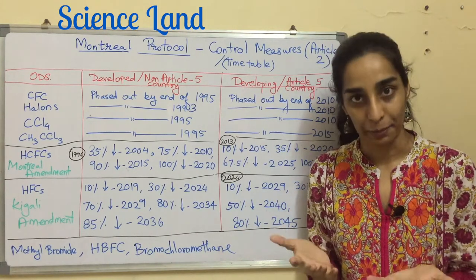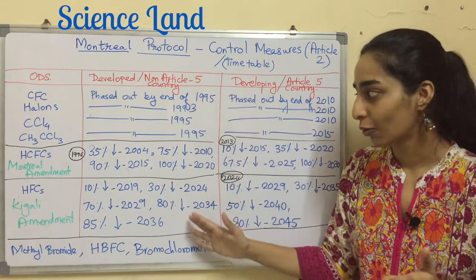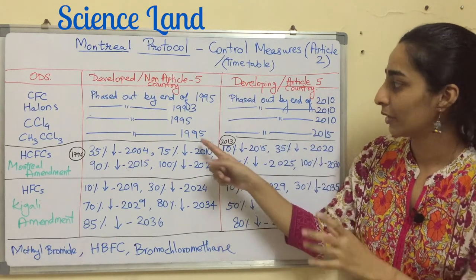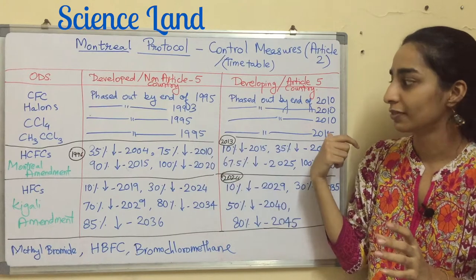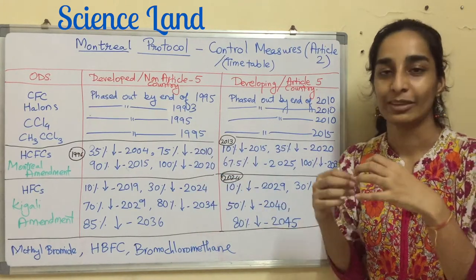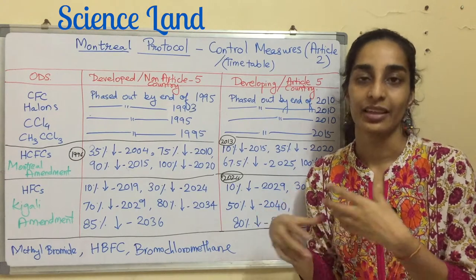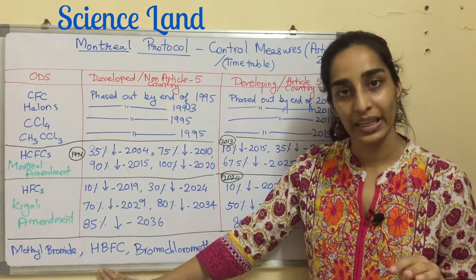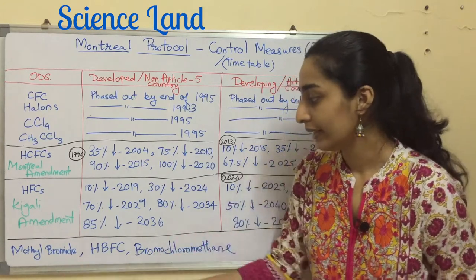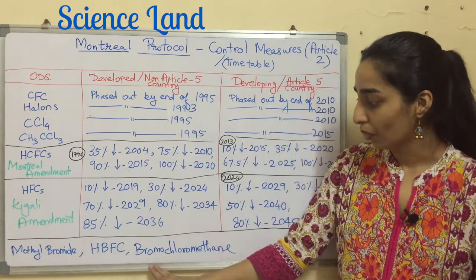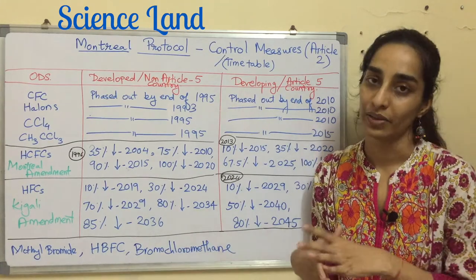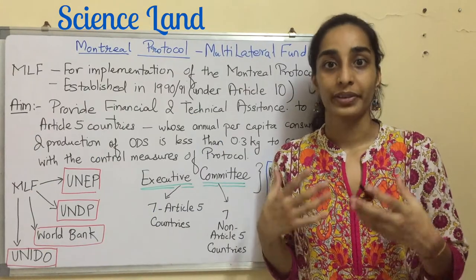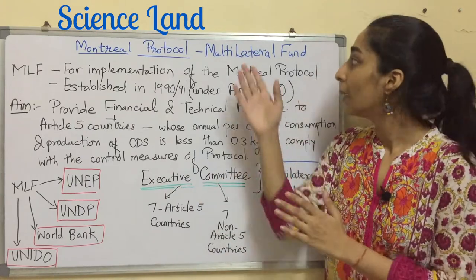The key principle is that less time is given to developed countries to phase out particular ODS, and more time is given to developing countries — this extra time accounts for their lag in technology, money, and other advancements. Apart from this, there are three more compounds already phased out: methyl bromide, hydrobromofluorocarbon, and bromochloromethane.